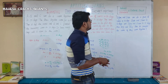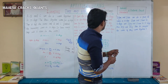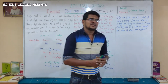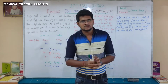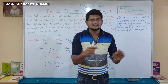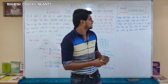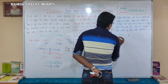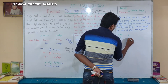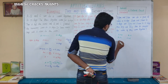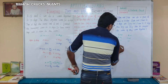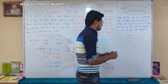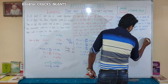Next question: Vijay and Bala can do a piece of work in 18 days. Bala and Charan in 12 days. Vijay and Charan in 15 days. How long will they take to complete the work if they work together? We have 3 pairs with days 18, 12, and 15.